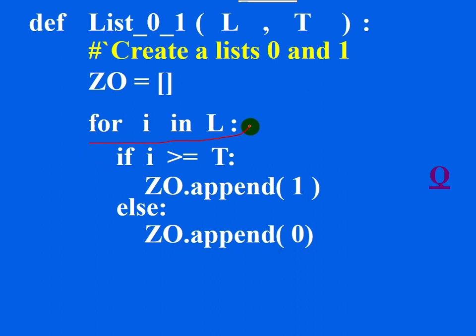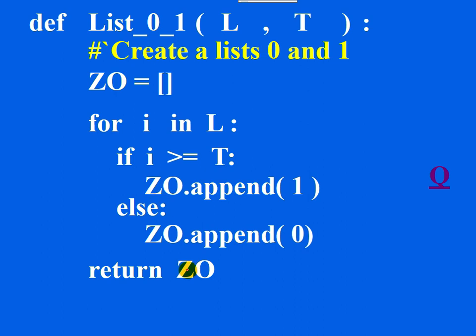In the else case, zero is appended to the new list. When the for loop finishes execution, zero_one contains all the zeros and ones. After calculating the answer, return it. For programming questions, step marks apply, so every step is important. You can use appropriate variable names.